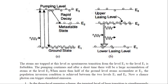When more than half of the ground level atoms have accumulated into the level E2, the number of atoms in the metastable state E2 becomes greater than the number of atoms in the ground state E1. At this point, the population inversion condition is achieved between the two levels E1 and E2.